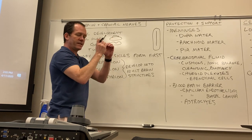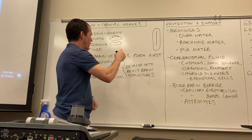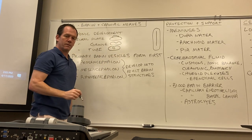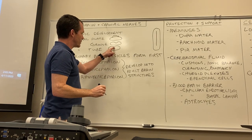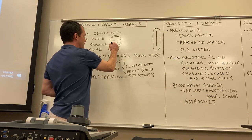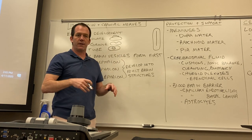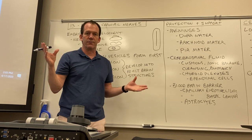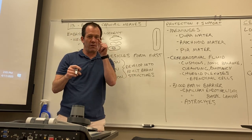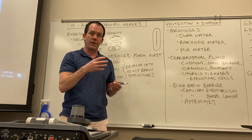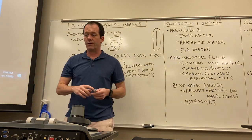Ultimately, it invaginates so much that the edges meet around the top, and you get a little tube. This little tube is what ultimately becomes your central nervous system. There are cells around the outside that become neurons, and it develops into all the parts of your brain, with that tube running down the middle becoming the tubes in your brain that hold cerebrospinal fluid, which we'll get to eventually.